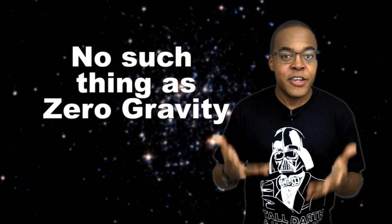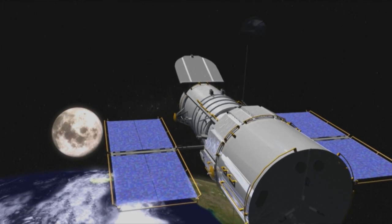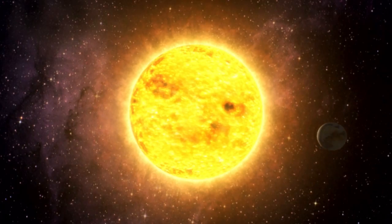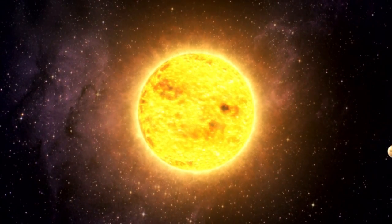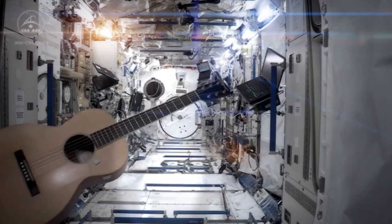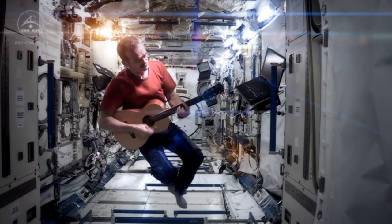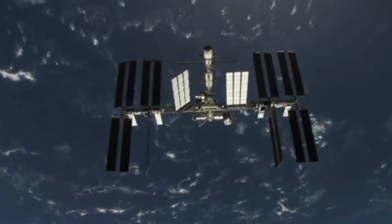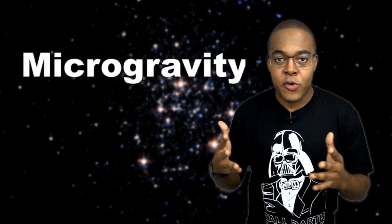There's no such thing as zero gravity. Gravity is everywhere in space. The same force that binds us to the ground keeps the moon in orbit around the earth and keeps the planets in orbit around the sun. Gravity never takes a break. So when astronauts look like they're floating, it's because they're falling at the same rate as the space station or the spaceship that they're in. And this is known as microgravity.